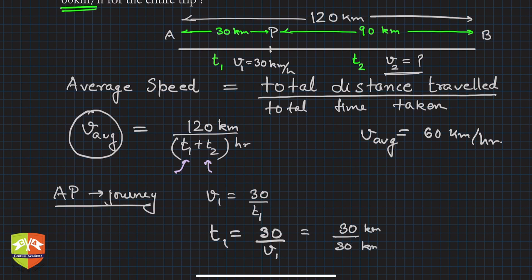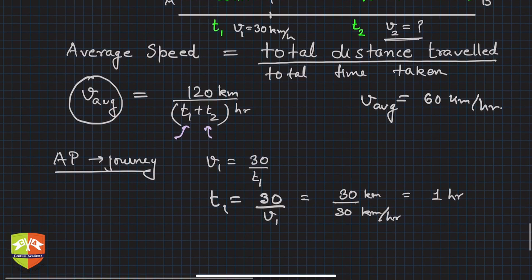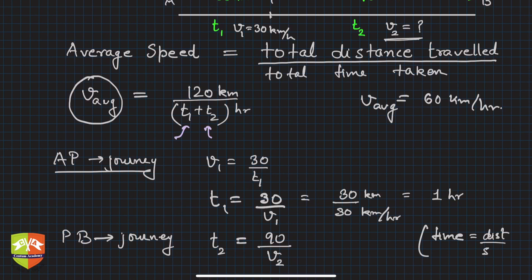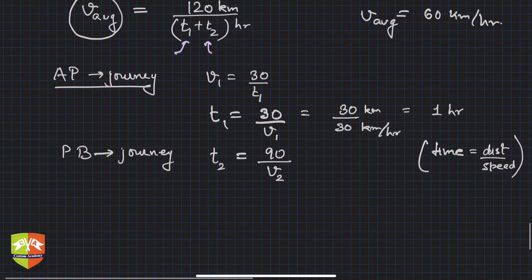What is t2? Similarly, in the journey P to B, t2 = 90/v2, since time equals distance divided by speed. Remember: speed equals distance upon time, so time equals distance upon speed. That's what we'll use here. t2 = 90/v2, and v2 is what we need to find.